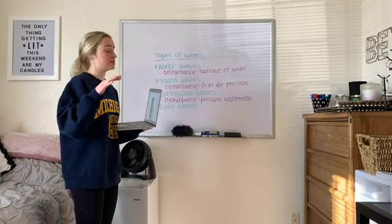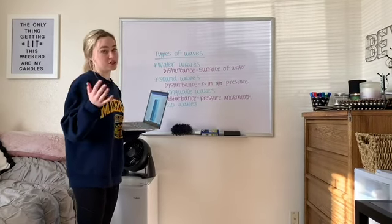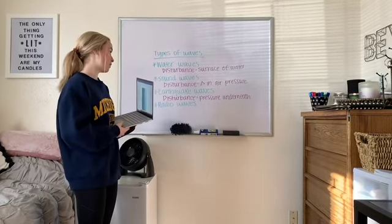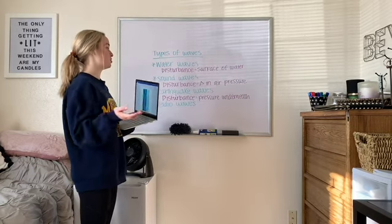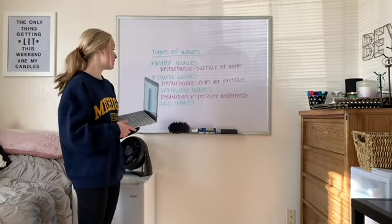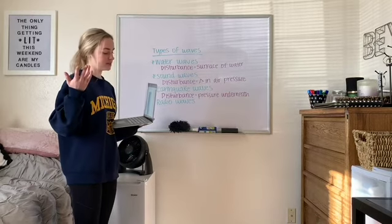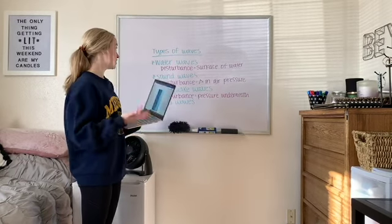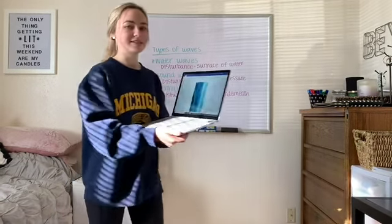In water waves, you get the disturbance on the surface of the water. In sound waves, you get the disturbance from the change in air pressure. Earthquake waves get their disturbance from the pressure underneath the earth's surface. And then we have radio waves. Here are some pictures of those wave examples.